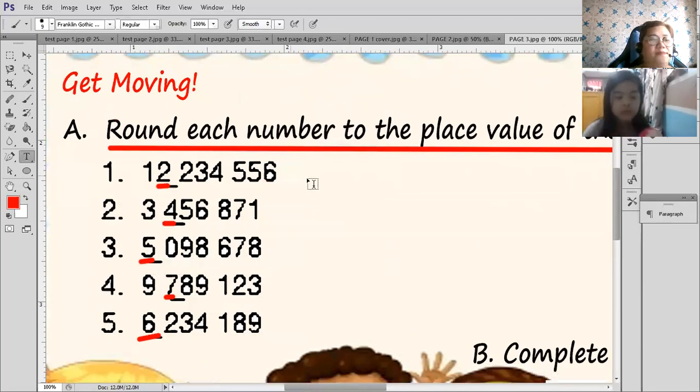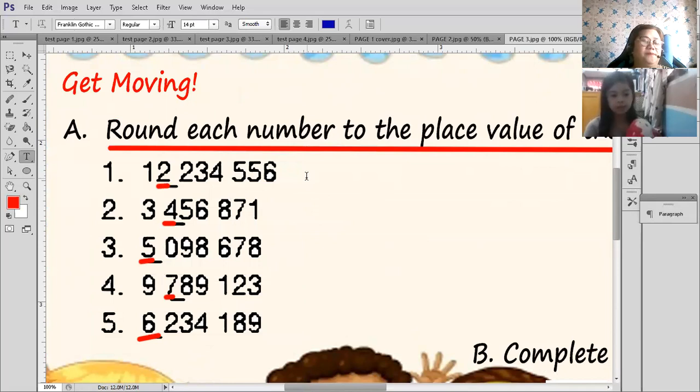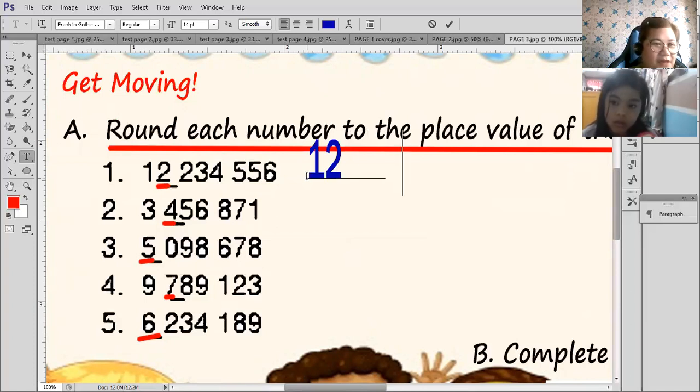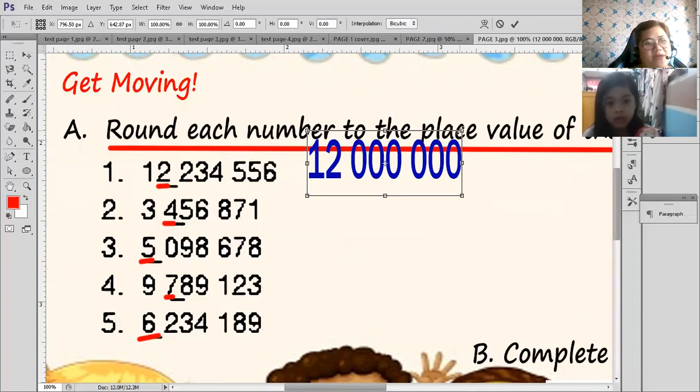12,000. Double check it, Mary Grace. Remember that we are rounding off to the hundred thousands. Oh, Mary Grace. The answer is 12,000,000. Is that your final answer? Yeah. Okay. Actually, that's right. Very good.